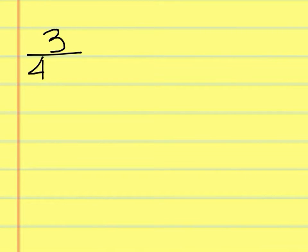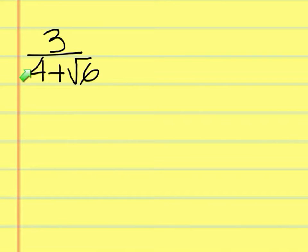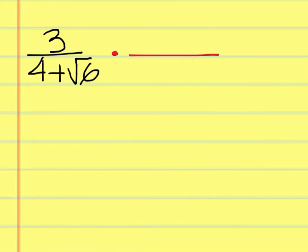And that is 3 over 4 plus the square root of 6. You can't multiply the top and the bottom by the square root of 6 because you're still going to be left with some crazy stuff because of this expression here. This is no longer just a radical term on the bottom — you have an expression. So to get rid of that expression containing the radical term, you have to multiply by something called the conjugate, which makes it like a difference of two squares.